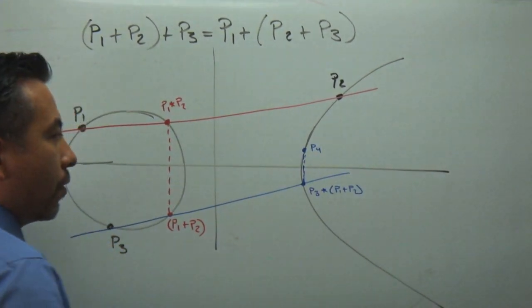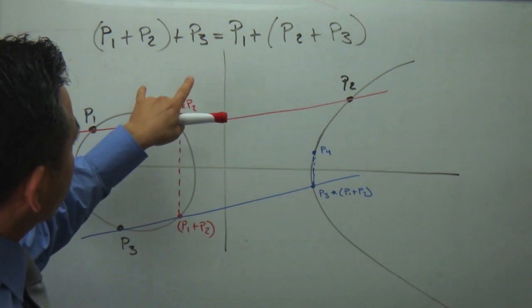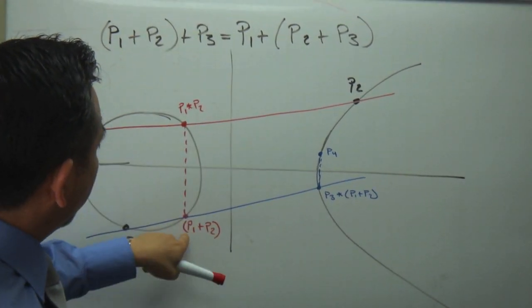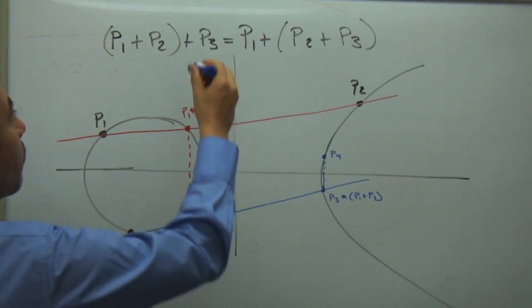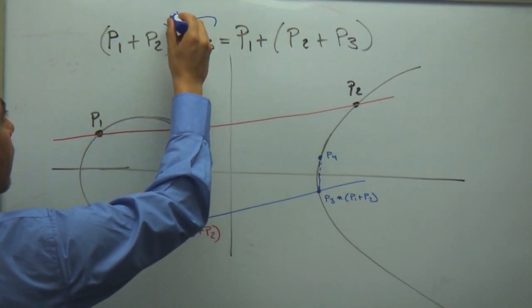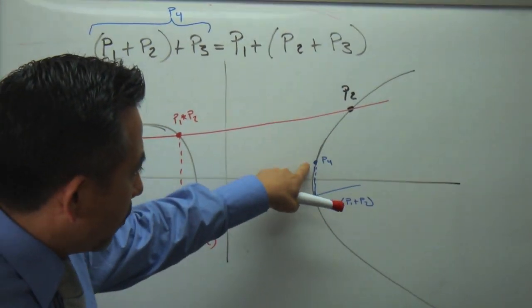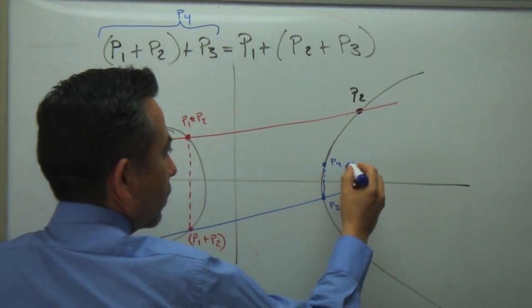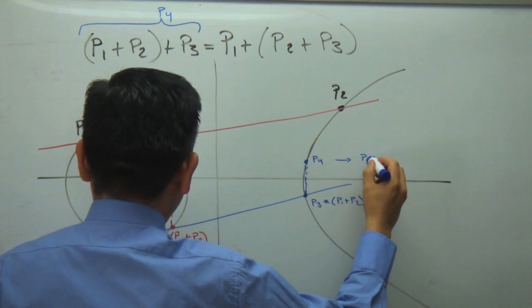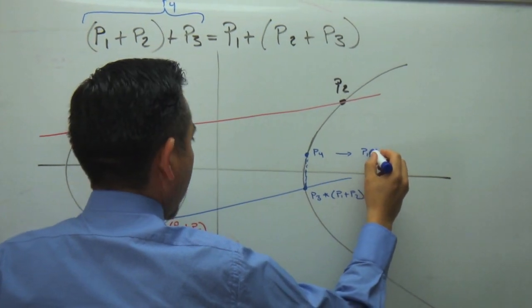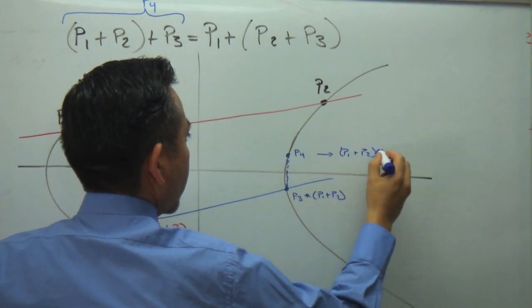So this is my point, I would say P4, which in reality is this thing. So (P1 + P2) + P3. So we'll call this P4, which we know is P1 + P2 + P3.